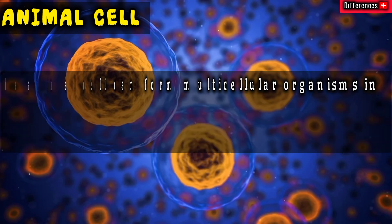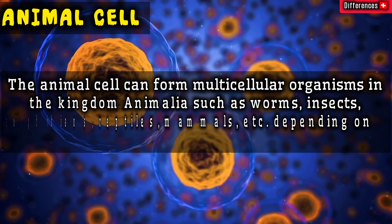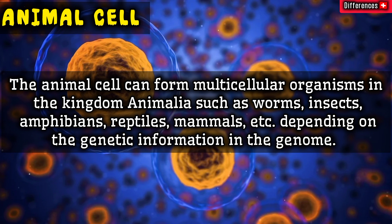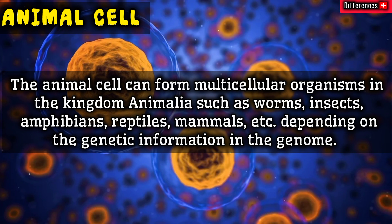Animal cells can form multicellular organisms in the kingdom Animalia, such as worms, insects, amphibians, reptiles, and mammals, depending on the genetic information in the genome.